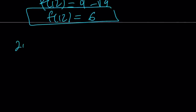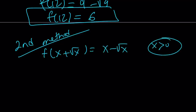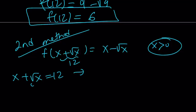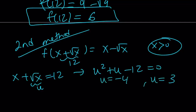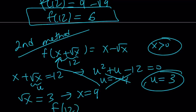Now for the second method, which is much shorter. We want f(12), so set x + √x = 12. Substituting u = √x gives u² + u − 12 = 0, so u = −4 or u = 3. Since √x must be positive, we reject −4 and take u = 3, giving x = 9. Replacing x with 9 gives f(12) = 9 − 3 = 6. Same answer, much shorter.